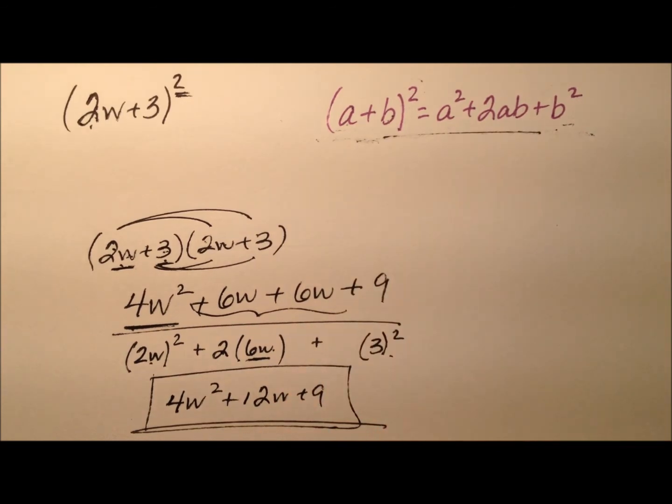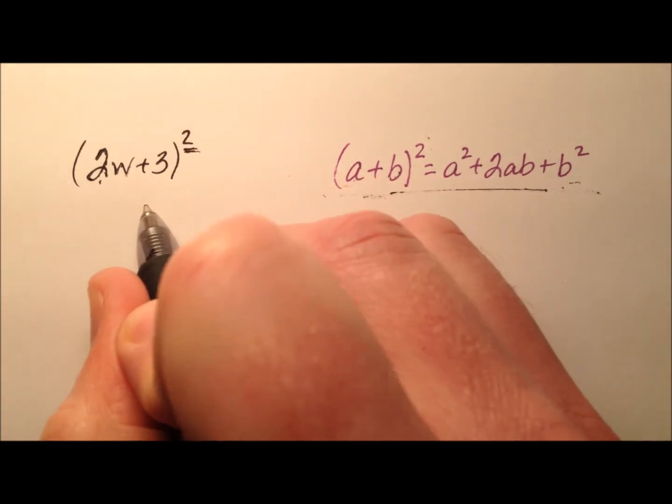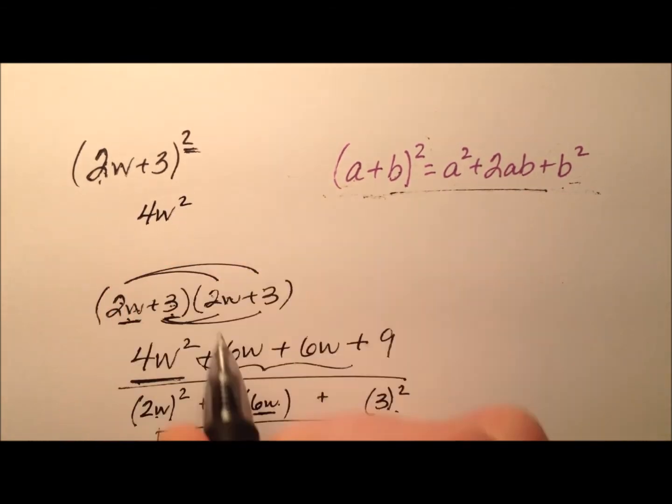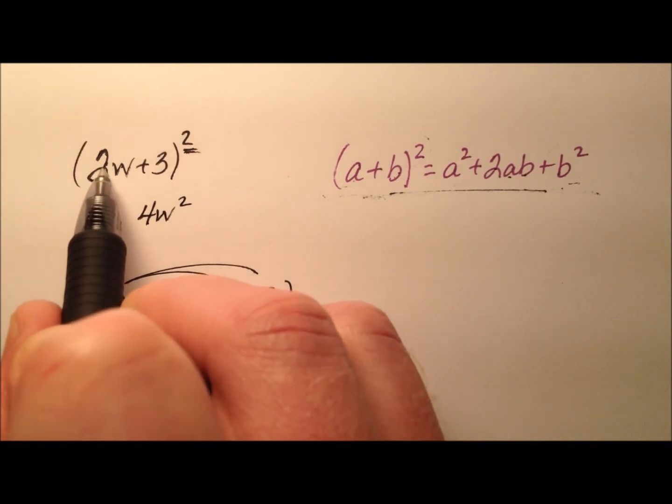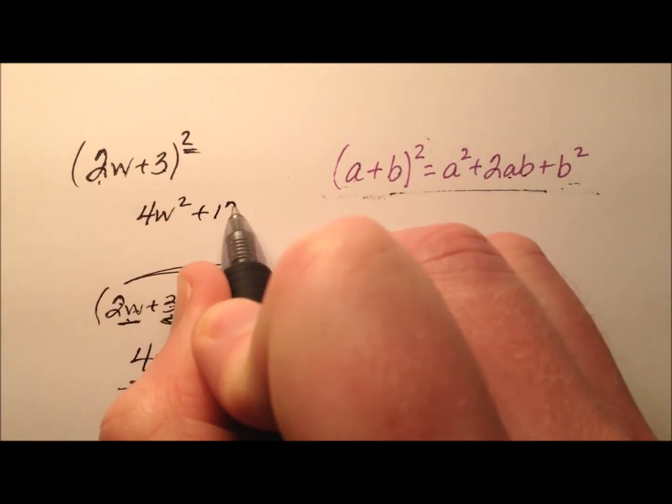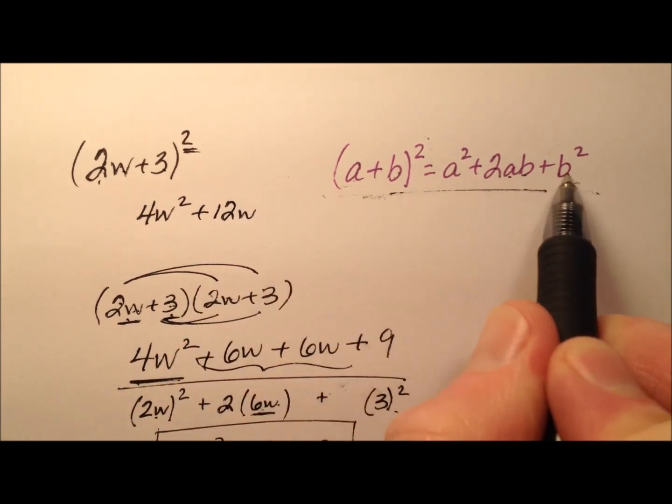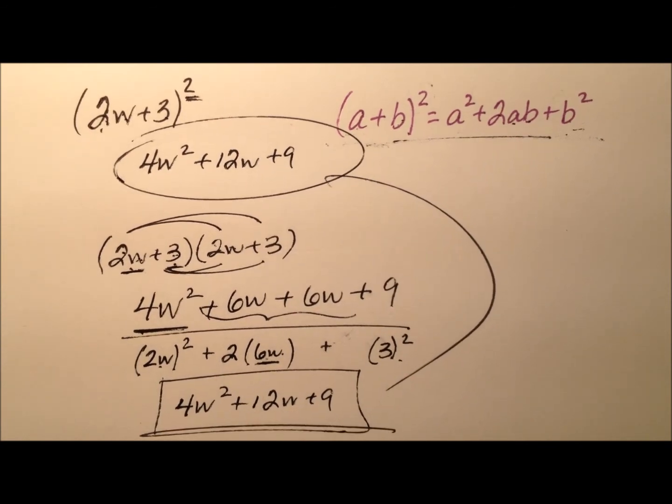Let's go ahead and use this formula and we'll see it's the exact same thing. So we have a squared, so 2w squared, which is 4w squared, and then twice the product of the 2. So 2 times 2 times 3, and then throw your w in there, so plus 12w, and then the square of the last one, 3 squared is 9. And of course you see they're exactly the same.